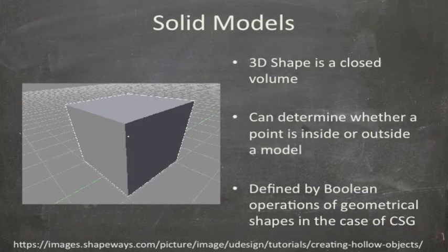Last but not least, we have the solid model. Solid models are 3D shapes which have a closed volume — you can determine whether a point is inside or outside. A solid model is basically defined by boolean operations of geometric shapes, in the case of CSG, Constructive Solid Geometry. Solid models are usually formed from already existing solid geometries like a cube, sphere, pyramid, or cylinder. It's the boolean operations of these geometries that form your solid models.